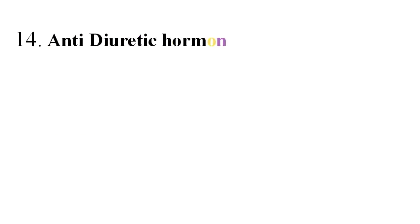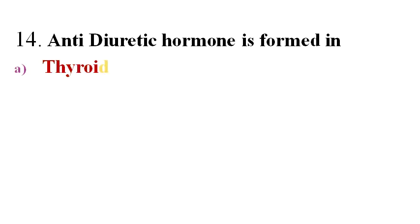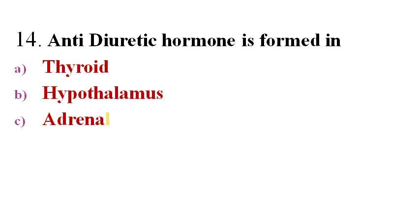Next question: Anti-diuretic hormone is formed in? Options A. Thyroid, B. Hypothalamus, C. Adrenal, D. Thymus.